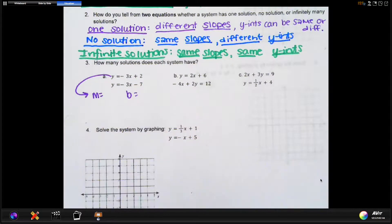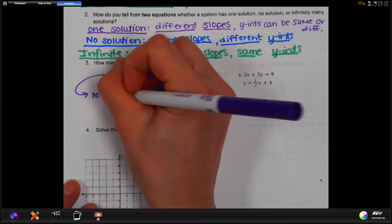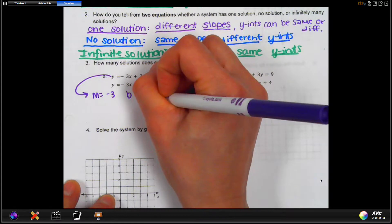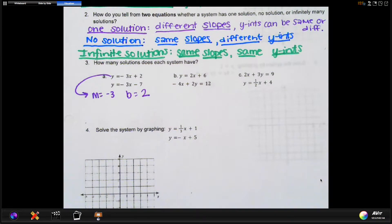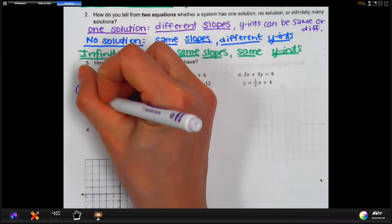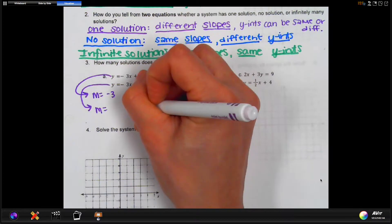So M, remember, if this is in y equals, the slope is next to the x. So that's negative three. And the y-intercept in this case is two. Okay, let's do it again for the second one. So this one, again, is in y equals as well. So we can go M and B again.